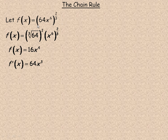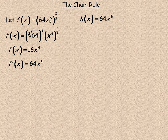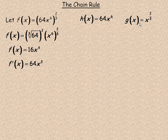Now I'm going to show how the chain rule works here. First, I need to define the inside function and outside function, because you need to define those for the chain rule to work. The inside function, I'll call h(x), is 64x⁶. That is raised to the power of 2/3, so the other function g(x) is x to the 2/3. We need to differentiate both of those — you need both derivatives to use the chain rule.